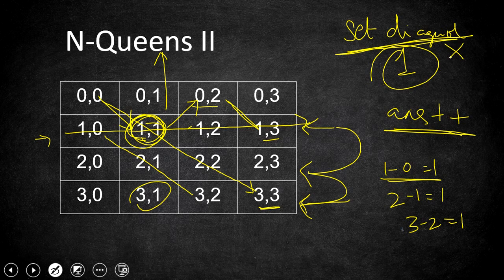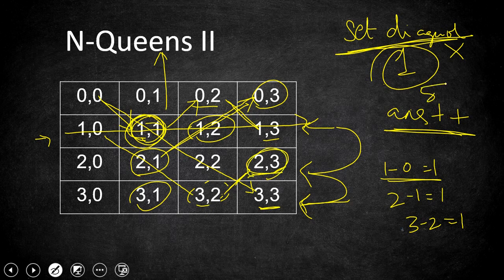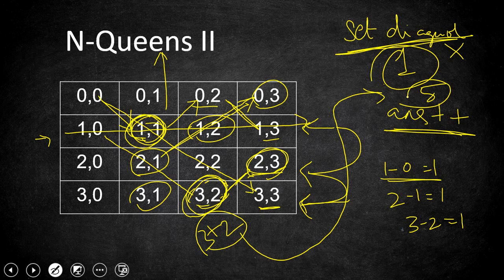For anti-diagonals, cells in the same anti-diagonal share the same sum of row and column. For example, (2,1), (1,2), and (0,3) all share sum 3. Similarly other anti-diagonals share the same sum. So we add row plus column and place that value in a set. For example, if we add row 2 and column 3 to get 5, and later we check (3,2) and compute 3 plus 2 equals 5 — it is already in the set, meaning a queen was already placed there. So we do not continue that path and backtrack to explore further solutions.